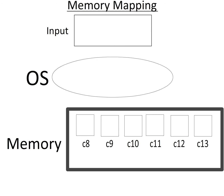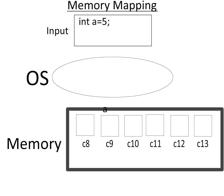Suppose you initialize a variable a. Suppose you write int a equal to 5. The memory management is done by the operating system. So it is the duty of the operating system to give a ticket to the variable a. Suppose the memory location assigned to variable a by the operating system is c10 — a hexadecimal number indicating the location of memory. So the variable a will reside in the memory location c10.